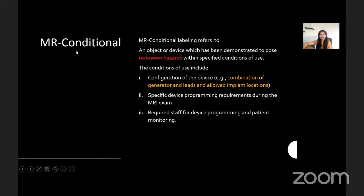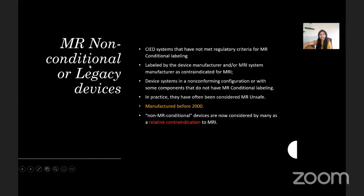When a device is labeled MR conditional, it means that such a device poses no known hazards within specified conditions of use. These conditions include a conditional labeling for the combination of the generator and leads, allowed implant locations, specified device programming requirements, and availability of required trained staff for device programming and patient monitoring. A non-MR conditional device is a system that has not met the regulatory criteria for MR conditional labeling — pertaining to the entire device or only some of its components. They are considered MR unsafe and have an older manufacturing date, usually before the year 2000. These legacy devices are now considered a relative contraindication for MRI.